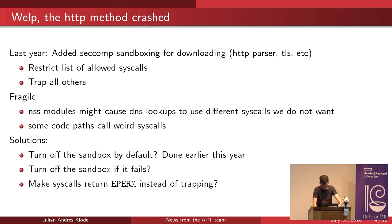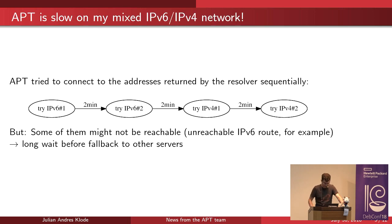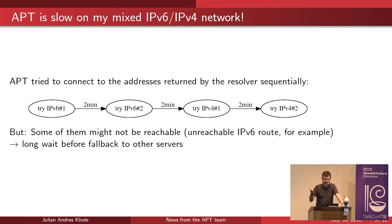The next thing is related to the HTTP method and other methods. If you have used Google Cloud, which has IPv6 disabled by default, apt used to connect to addresses returned by the DNS resolver sequentially — it tried the first IPv6 address, then the second, and so on, before trying IPv4. The timeout between tries was two minutes, so with four IPv6 addresses, it would take eight minutes to fall back to IPv4. Some clouds disabled IPv6 handling in apt to work around this.